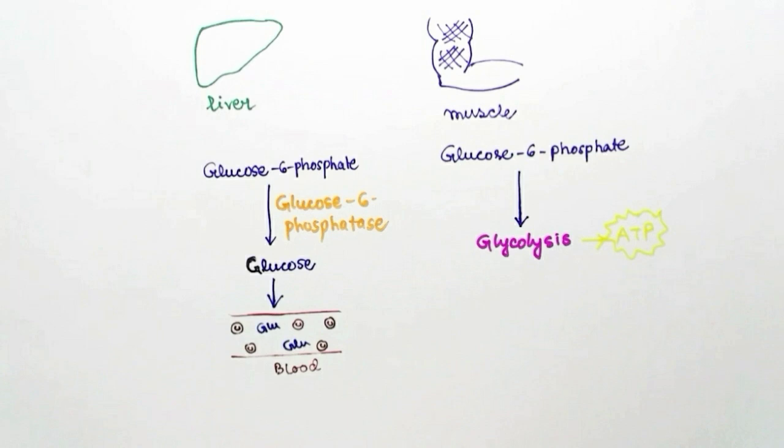Instead, muscle cells use glucose-6-phosphate directly through glycolysis to produce energy. That energy is utilized by the muscle cells during fasting, when we are not eating any food. This completes the process of glycogenolysis.